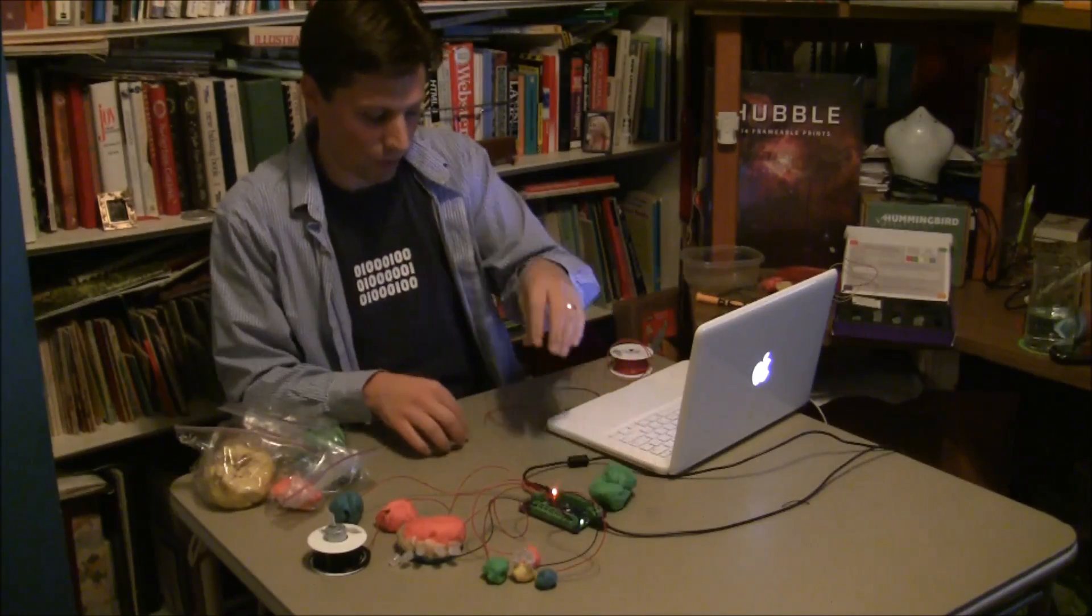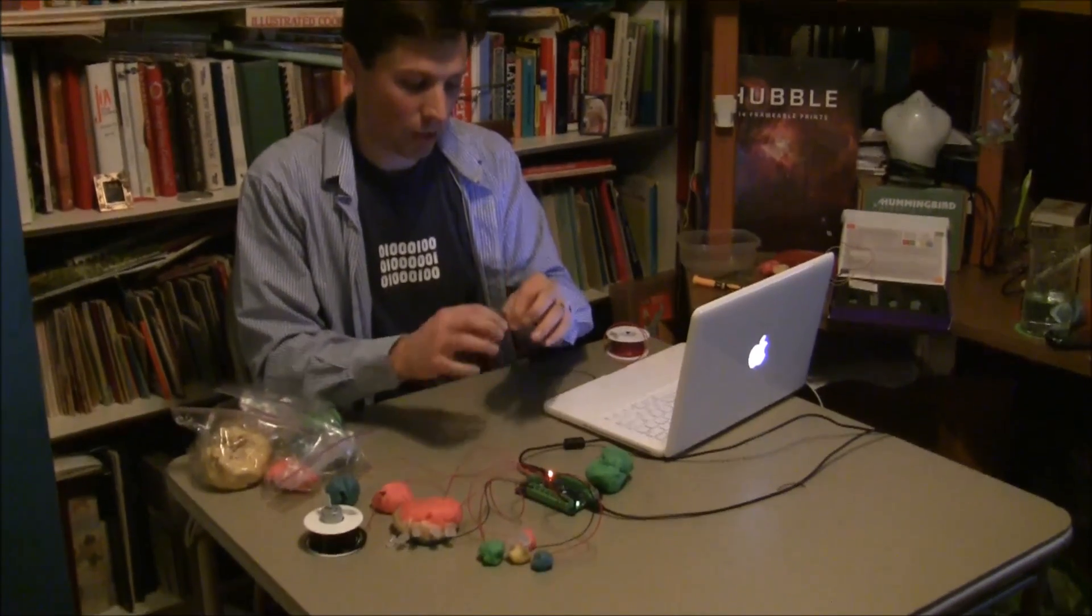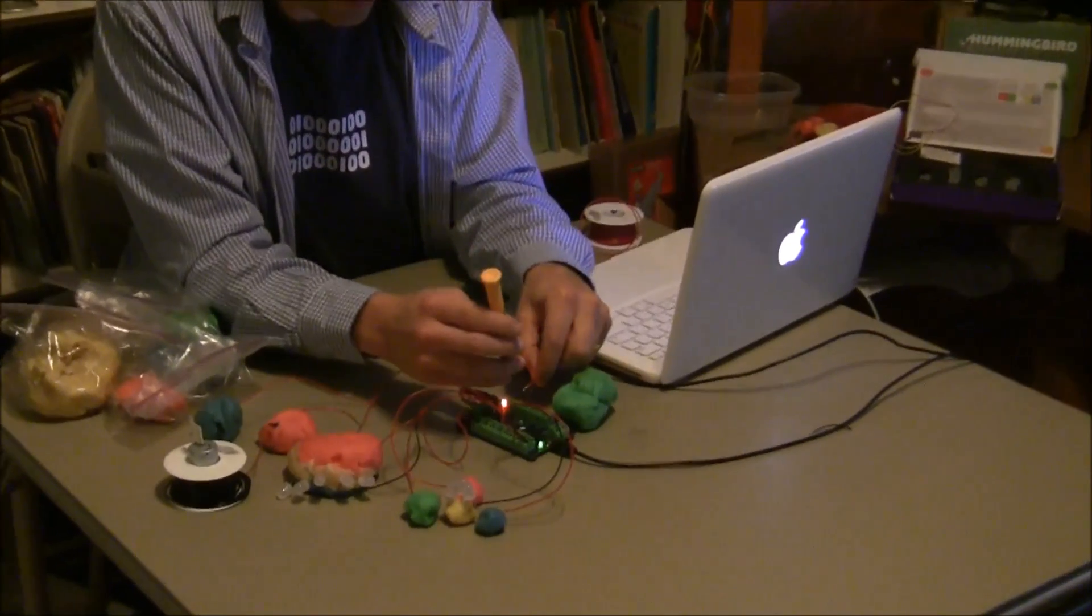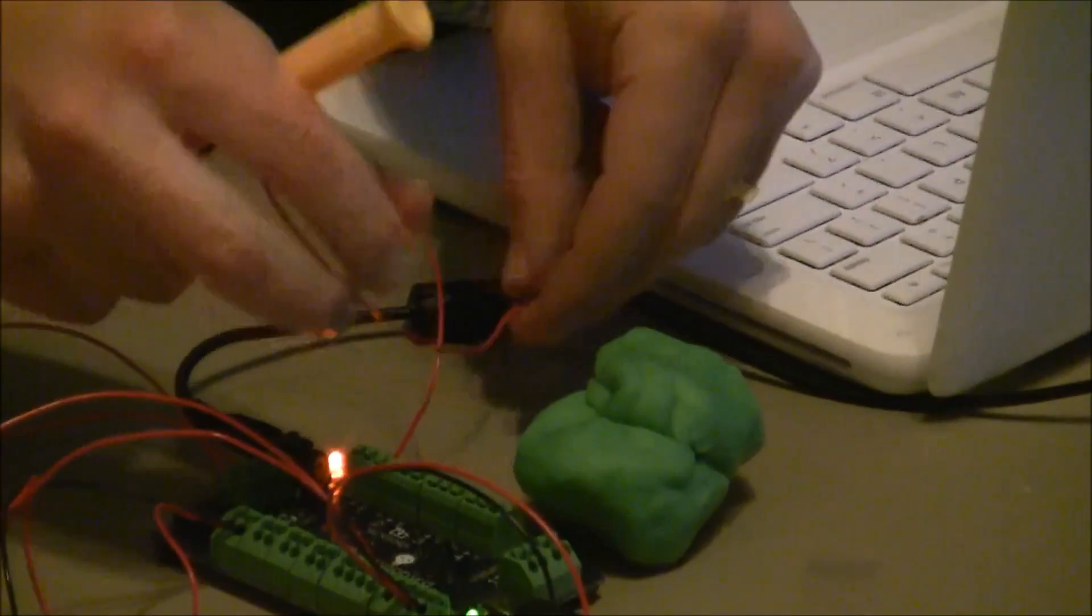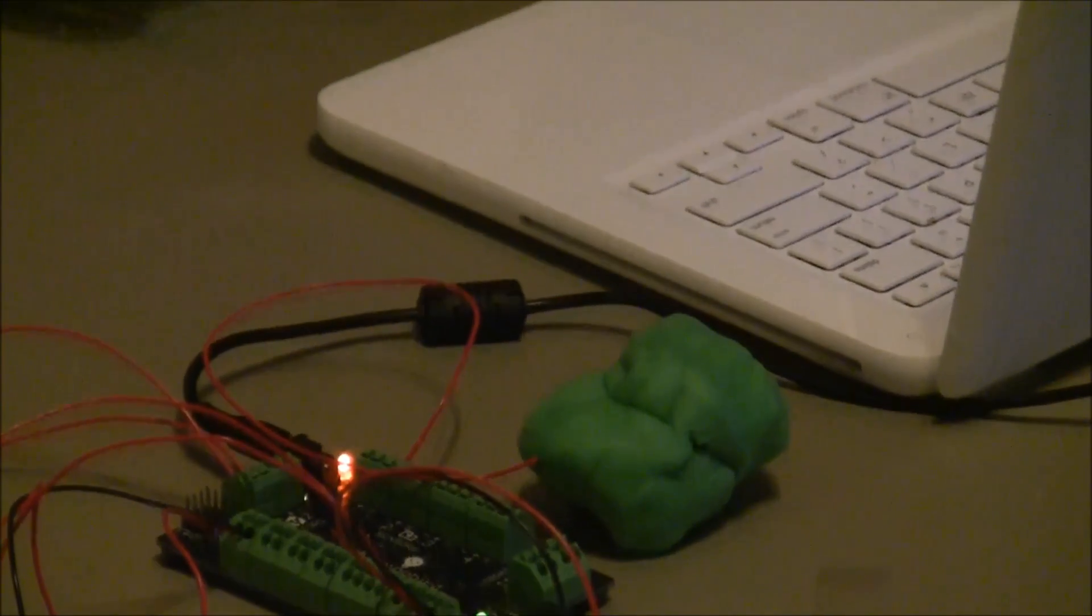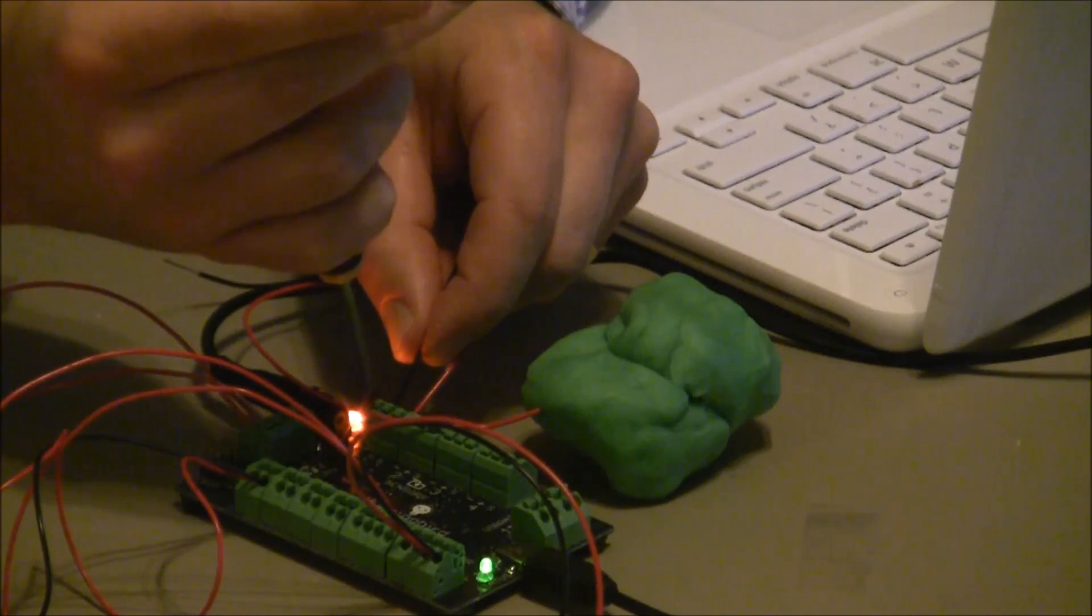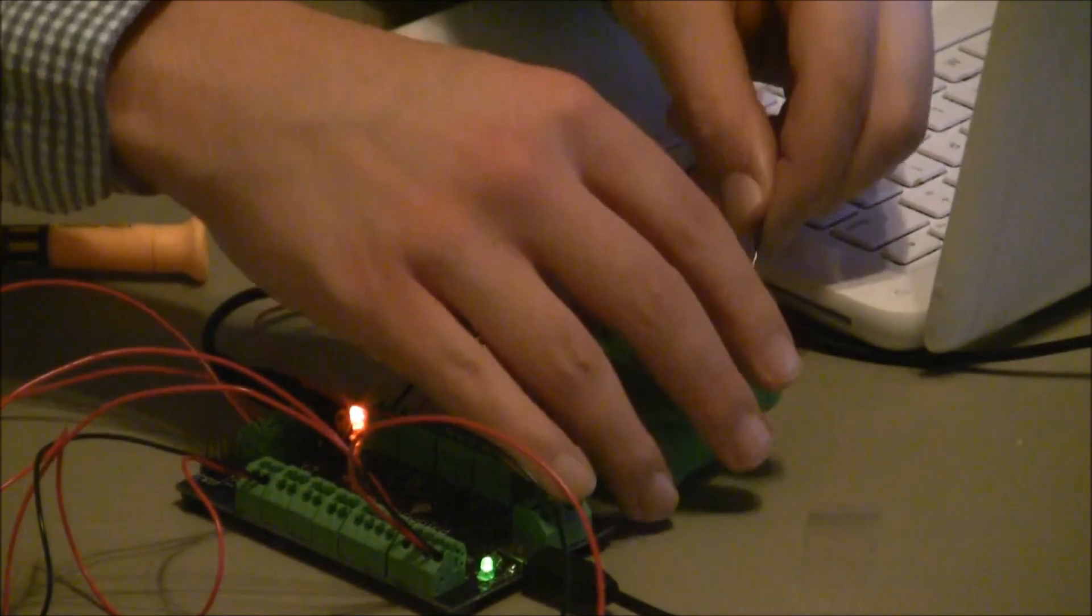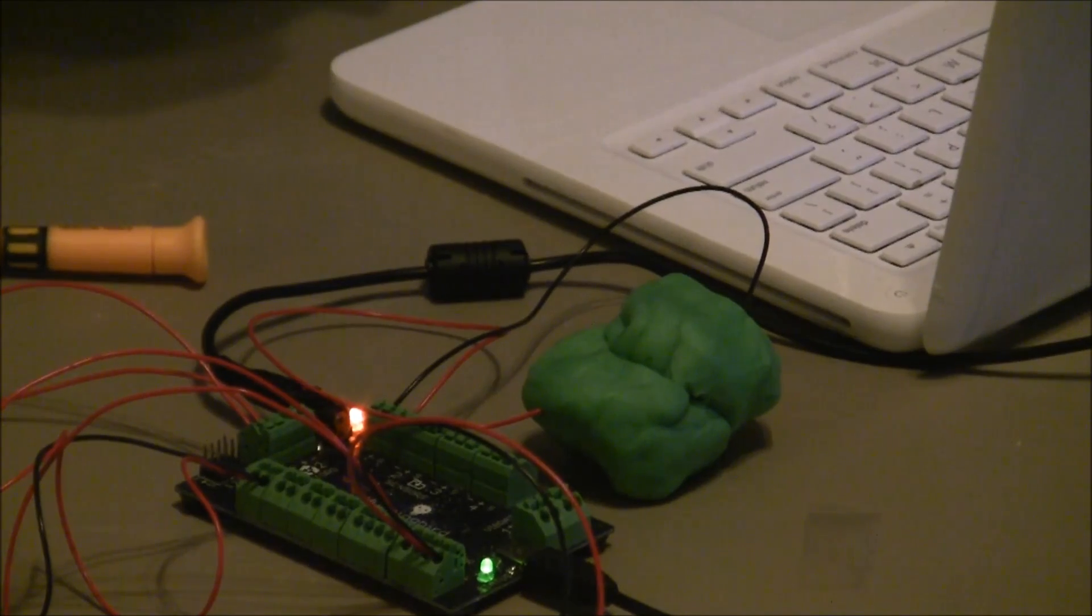And the way you do that is to take one wire and hook it up to the S terminal of one of your sensor ports, and stick it into a ball of dough. Take another wire, hook that up to the minus terminal on your sensor port. Stick it into the same ball of dough.